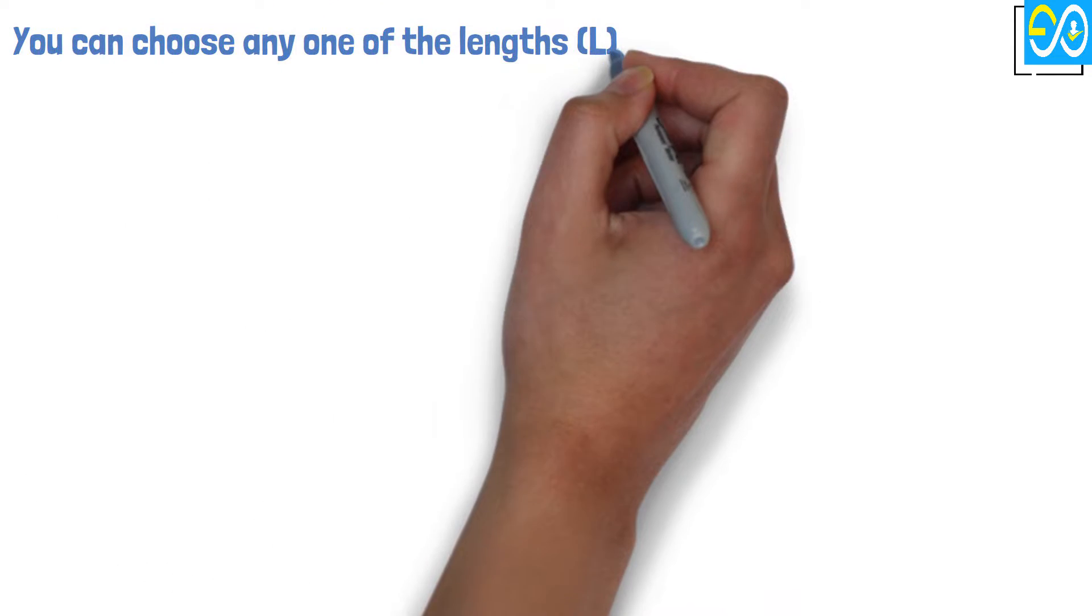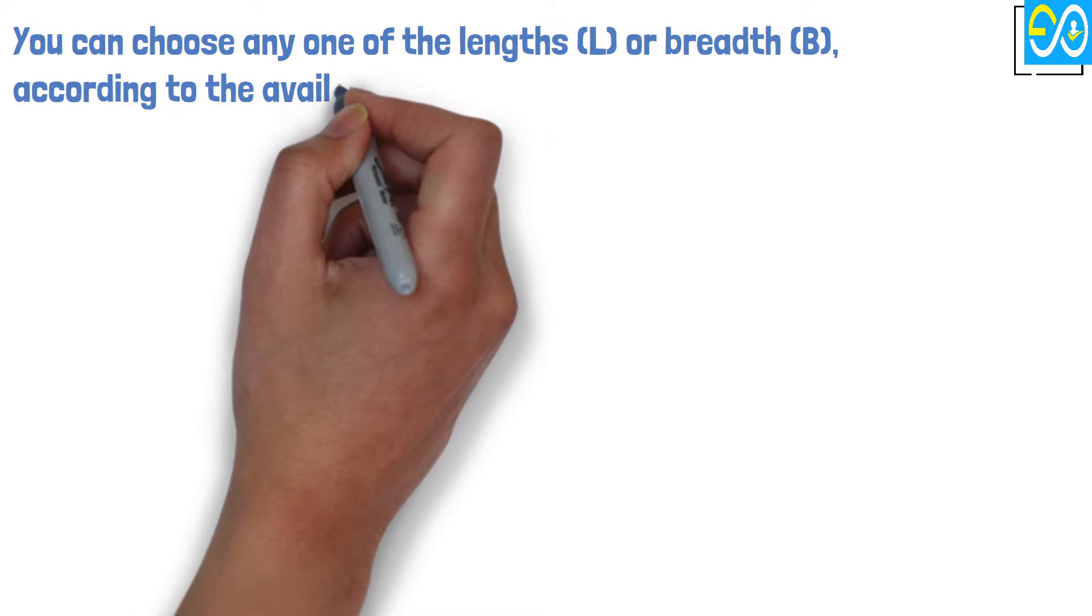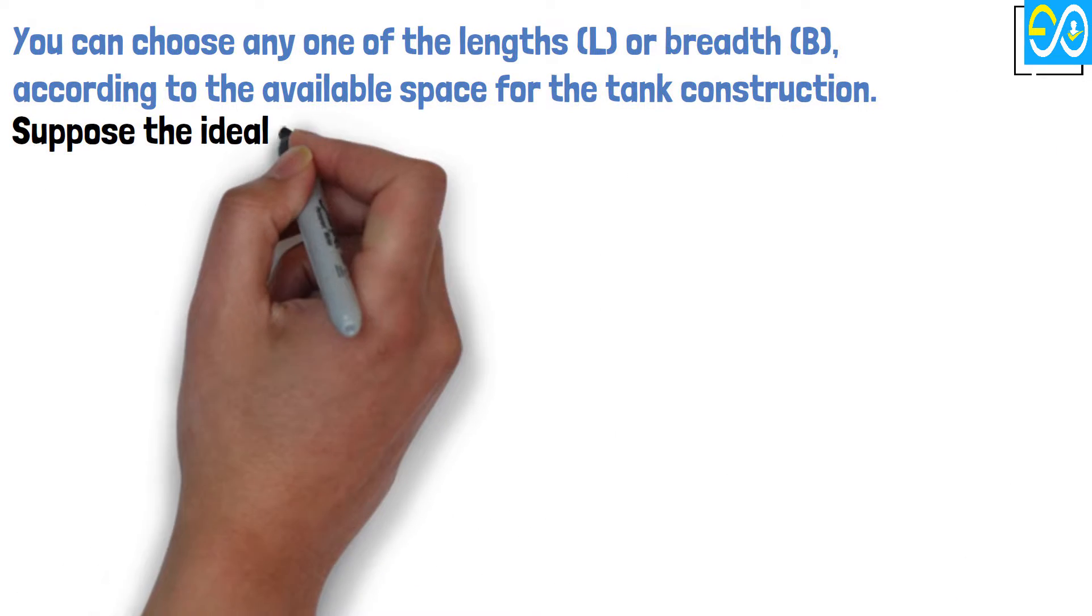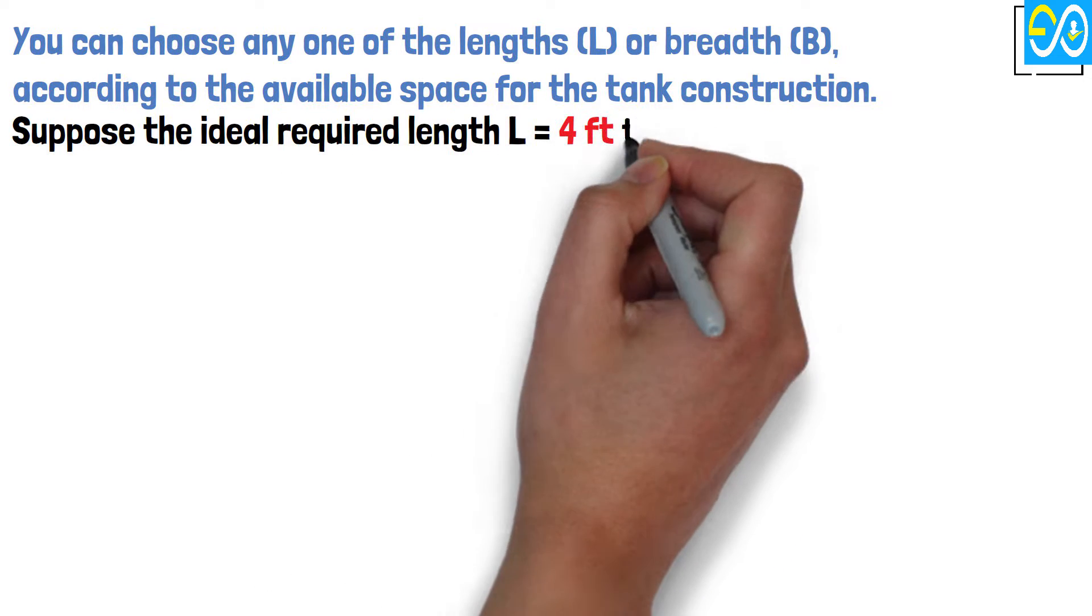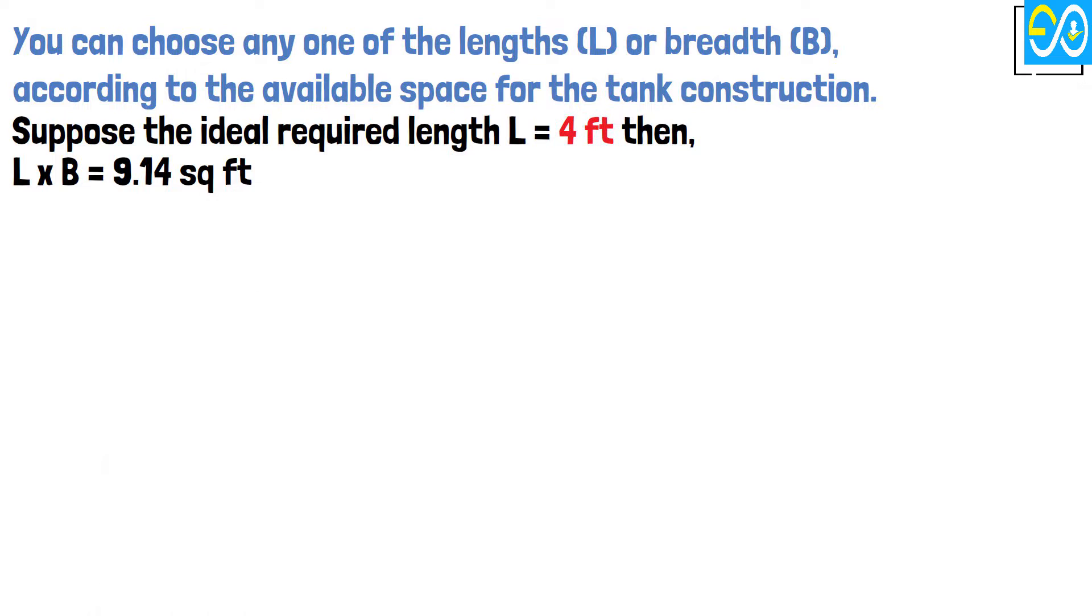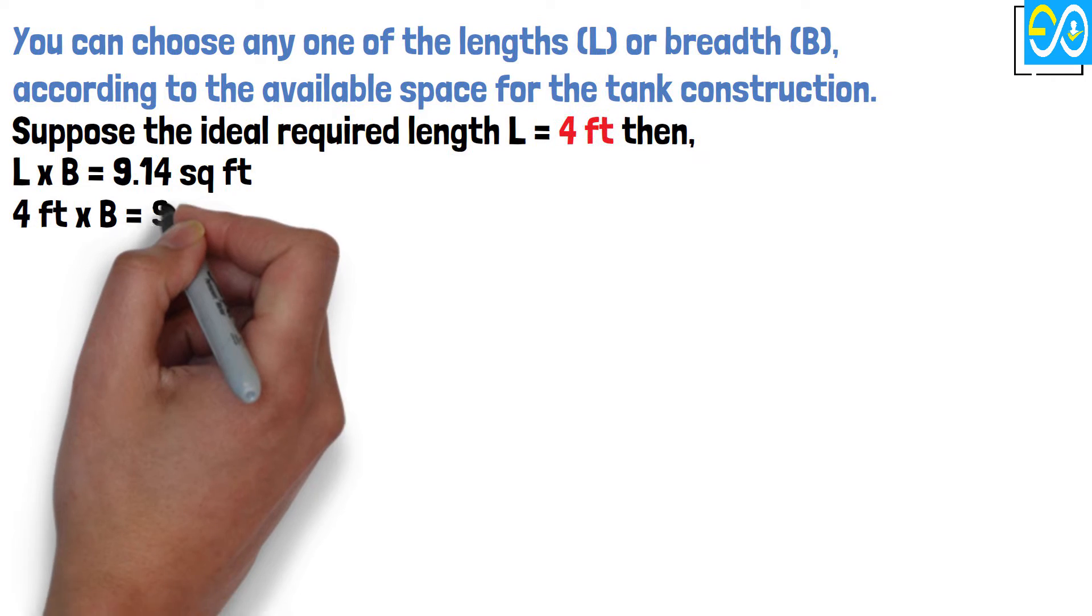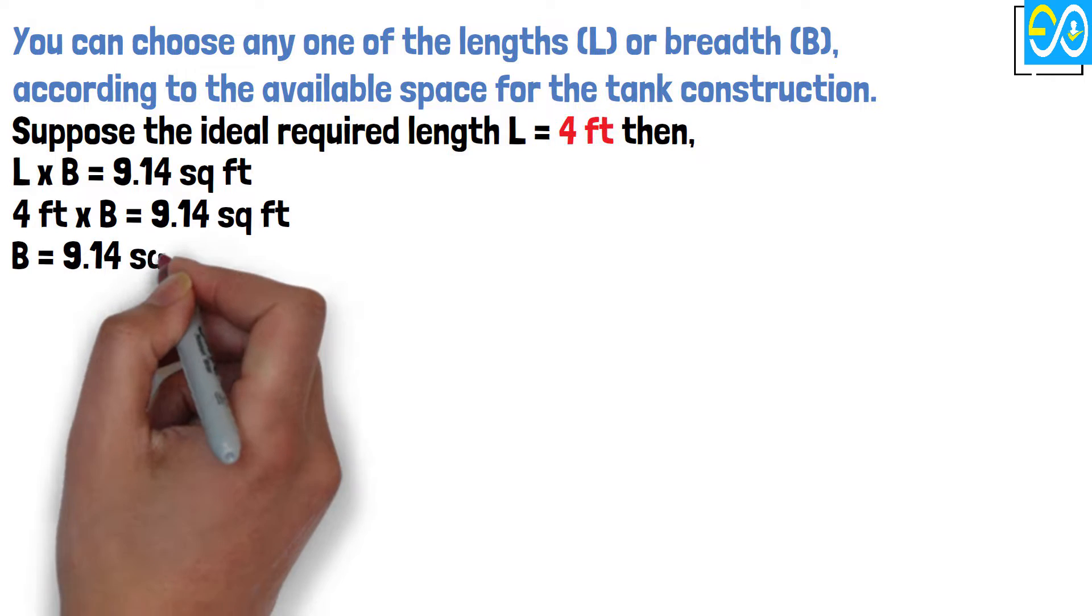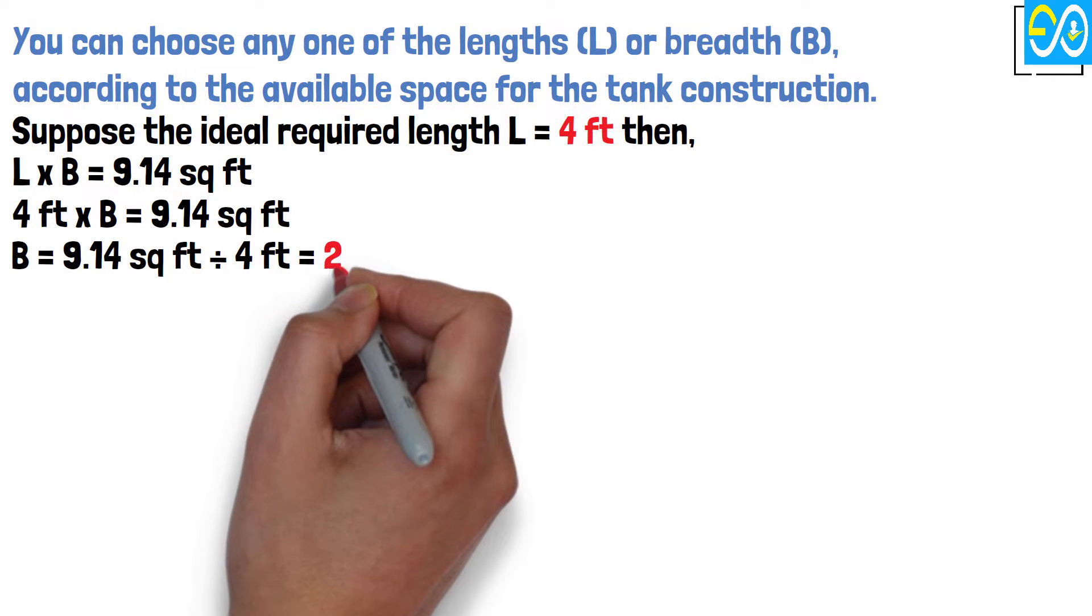You can choose any one of the lengths or breadth according to the available space for the tank construction. Suppose the ideal required length L equals 4 feet. Then L times B equals 9.14, so 4 times B equals 9.14, and B equals 9.14 divided by 4, equals 2.285 feet.